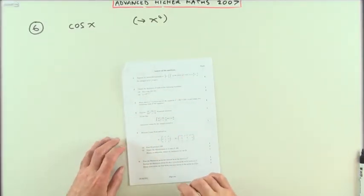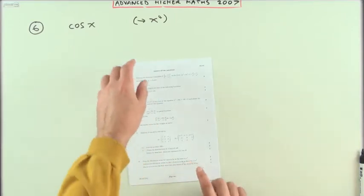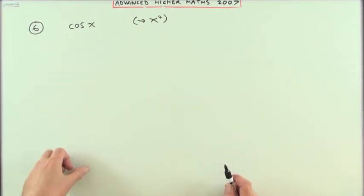Number six from the 2007 Advanced Higher, MacLaurin series. Unfortunately the first bit says find the MacLaurin series for cos x as far as the term in x to the 4. I say unfortunately because it could just have said write down or state because this is one of the ones you should learn.